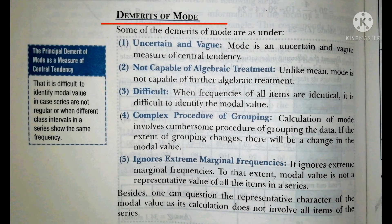Third is Difficult. When the frequencies of all items are identical, it is difficult to identify the modal value. If different values have identical frequencies, it becomes difficult to find out the mode.